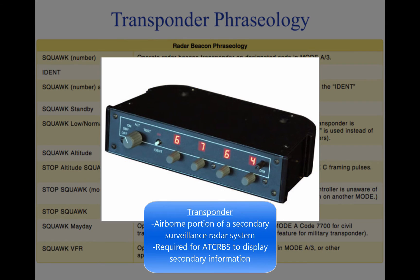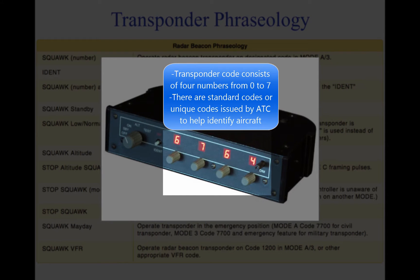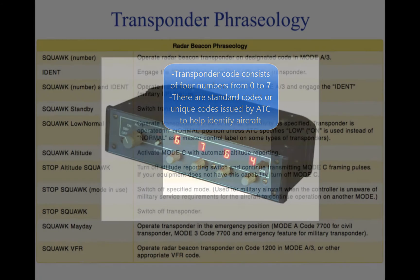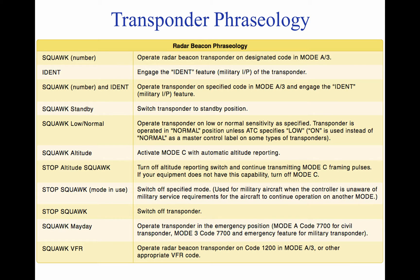The transponder is the airborne portion of the secondary surveillance radar system, and a system with which a pilot should be familiar. The ATC-RBS cannot display secondary information unless an aircraft is equipped with a transponder. A transponder is also required to operate in certain controlled airspace. A transponder code consists of four numbers from 0 to 7, providing 4096 possible codes. When a controller requests a code or function on the transponder, the word 'squawk' may be used. Additional information concerning transponder operation can be found in the AIM Chapter 4.